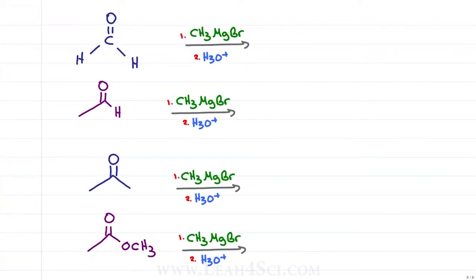Let's take a look at what happens when a Grignard reacts with formaldehyde, an aldehyde, a ketone or a carboxylic acid derivative like an ester.